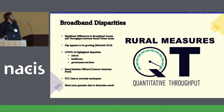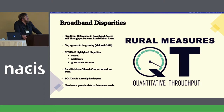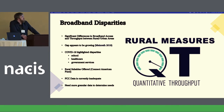So broadband disparities — first of all, just sort of establish that they exist. There are significant differences in broadband access between rural and urban areas. The gap actually appears to be going larger from what data we have, which is fairly limited. But COVID-19 has highlighted a lot of these disparities and pushed through a lot of money in Congress to actually rectify some of them.